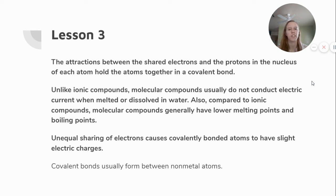Lesson three, we have three key questions. The attractions between the shared electrons and the protons in the nucleus of each atom hold the atoms together in a covalent bond. Unlike ionic compounds, molecular compounds usually do not conduct electric current when melted or dissolved in water. Also, compared to ionic compounds, molecular compounds generally have lower melting points and boiling points. An unequal sharing of electrons causes covalently bonded atoms to have slight electric charges. Covalent bonds usually form between nonmetal atoms.